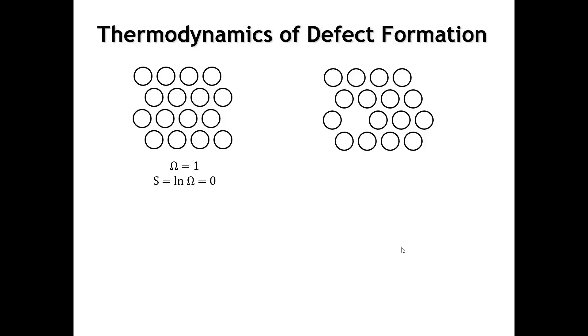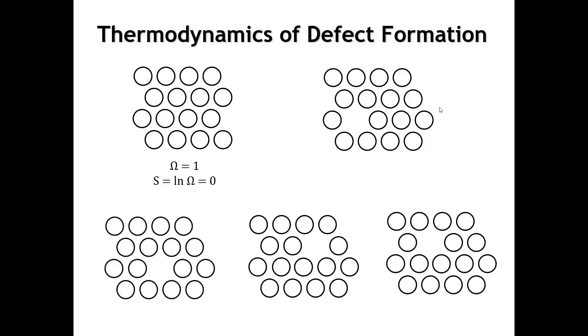But once we introduce a defect, in this case what we're going to do is to take an atom from the bulk and move it out to the surface. And once it gets out here on the surface, we still have the same collection of atoms. But now, we've introduced more than one way that we can arrange the crystal. We could move that vacancy around.